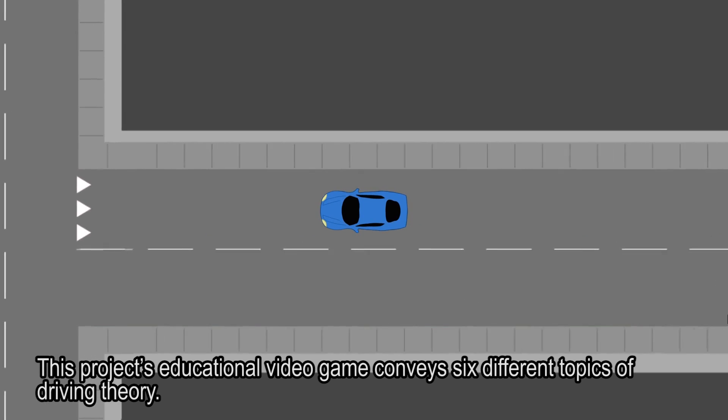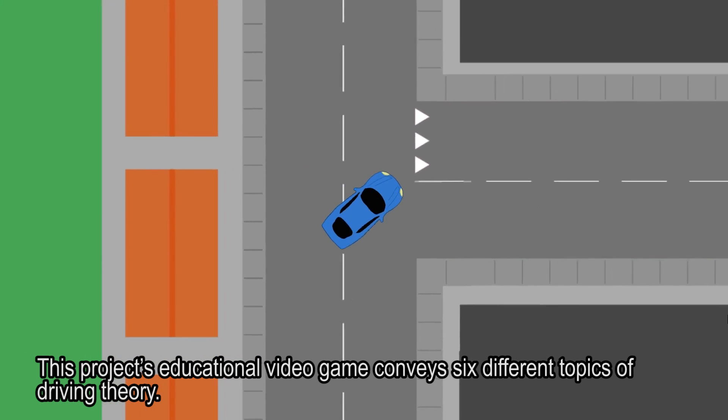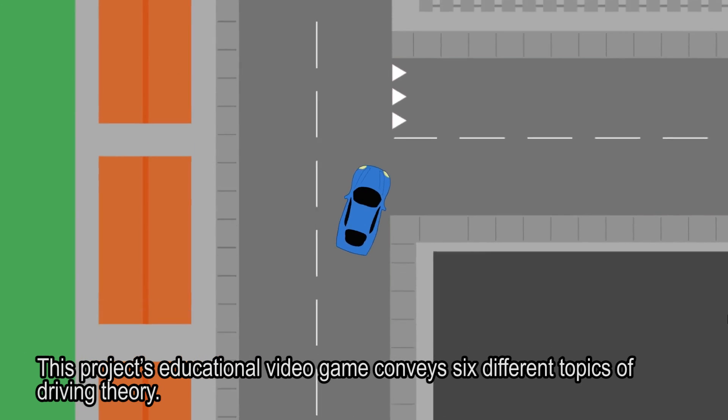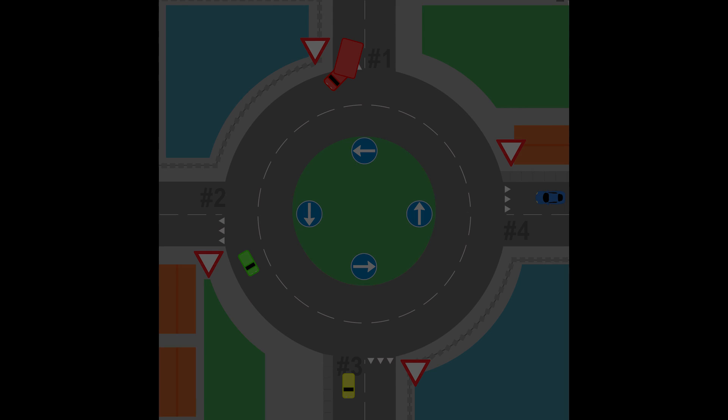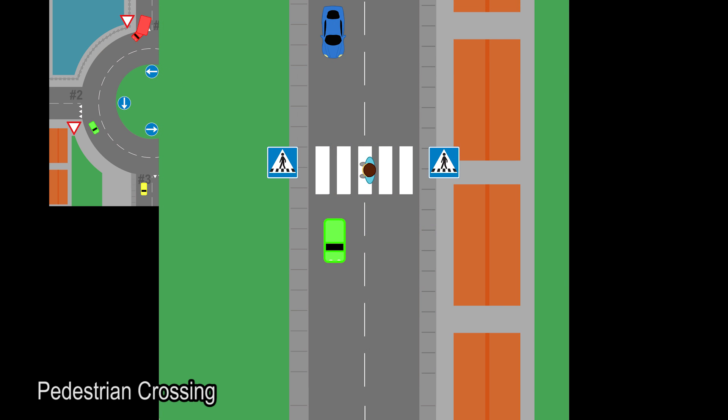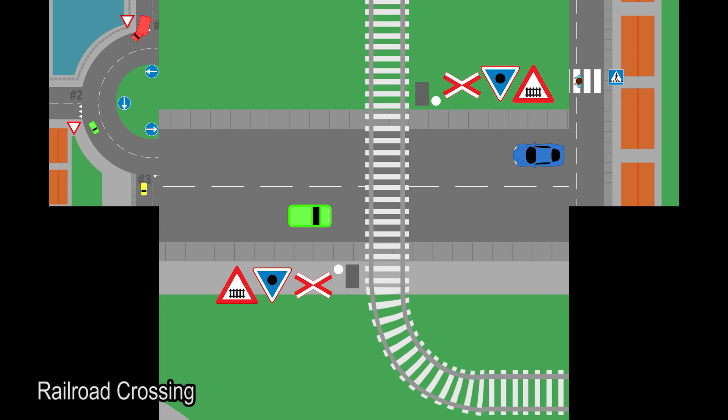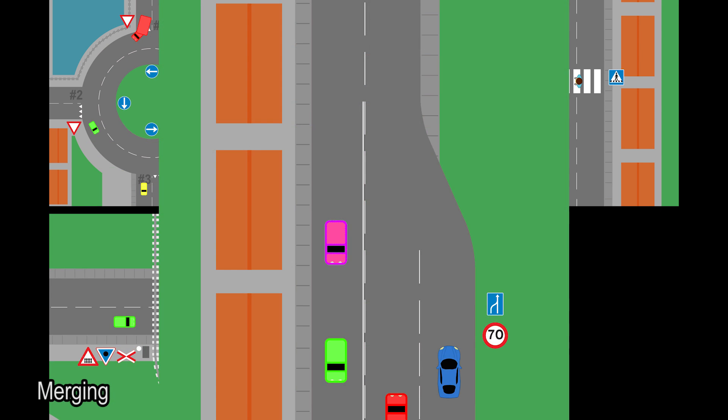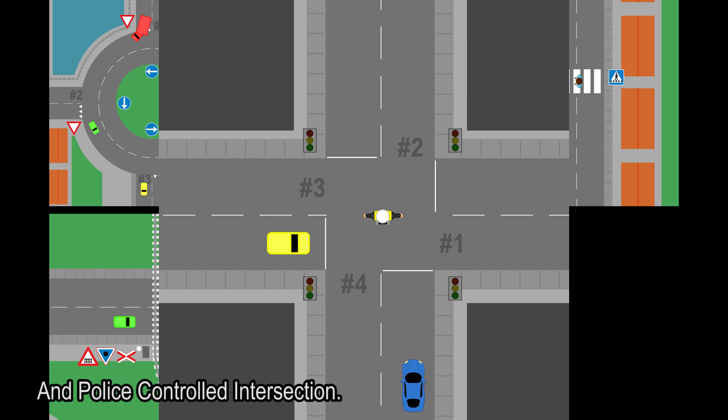This project educational video game conveys six different topics of driving theory. These topics were as follows: roundabout, yielding, pedestrian crossing, railroad crossing, merging, and police control intersection.